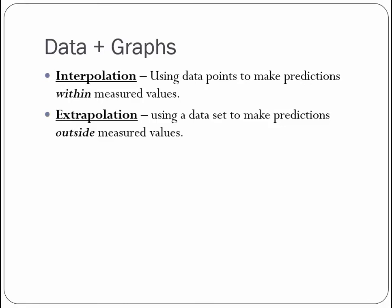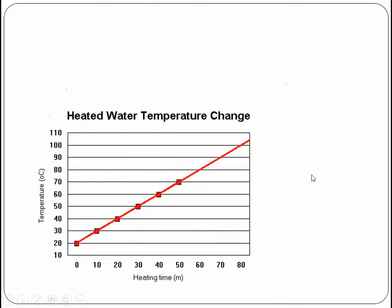Some other terms is interpolation versus extrapolation. Interpolation is using your data points to make predictions within the values that you have measured. So we're within the range that our experiment measured. Extrapolation is taking your data set and moving it to make predictions outside the range that you tested. So let's take a look at some examples here.